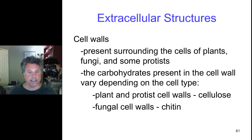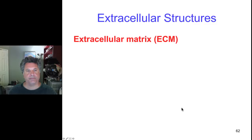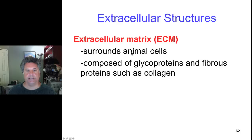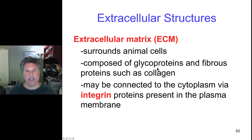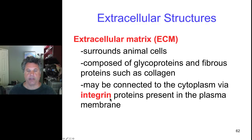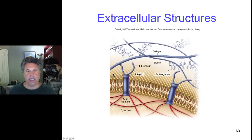Chitin is also used by arthropods such as lobsters and insects as their exoskeleton. Fungal cell walls are also made out of chitin. In the extracellular matrix of animal cells, we have a complex mixture of glycoproteins and fibrous proteins like collagen and fibrin. The extracellular matrix can be contacted by the cell through integral membrane proteins — called integrins — embedded in the plasma membrane, which interact with the extracellular matrix. Those integrin proteins can also interact with intracellular molecules, so that communication can exist between the extracellular matrix and the cytoplasm.